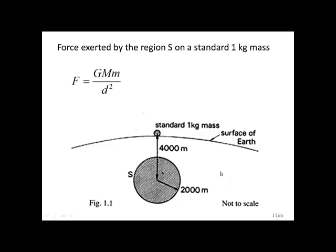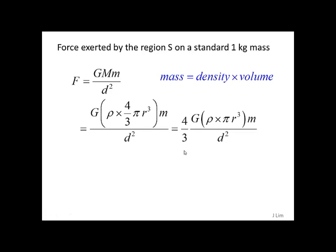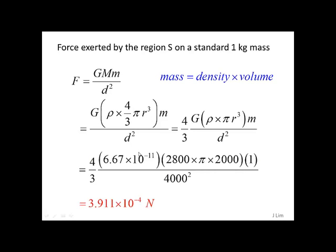The force exerted by the region S on the standard mass is equal to GMm over d squared, where d is the distance, in this case 4,000 meters. Now the mass is the density times volume, so we replace the mass with density times volume. So we have F equal to 3.911 times 10 to the power of minus 4 newtons.